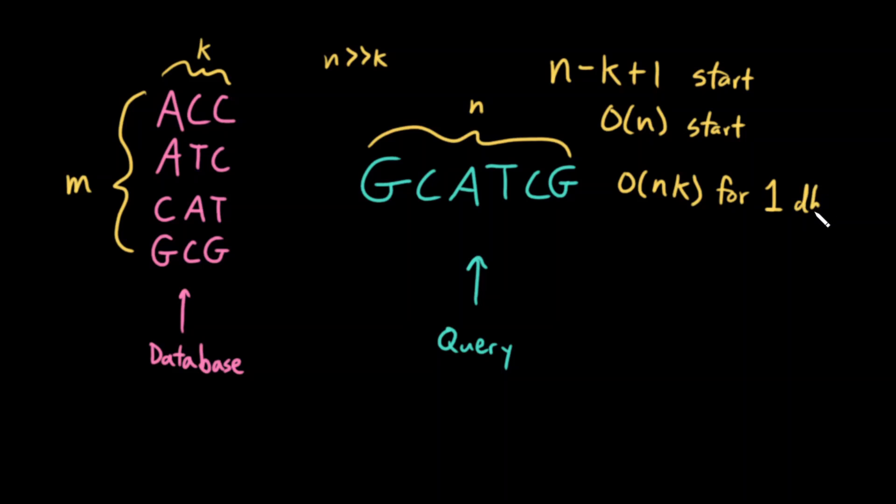For one database sequence, the overall time complexity is O(nkm), and this is extremely slow. The human genome for example is four billion letters long, k could be decently big—oftentimes I'm looking for motifs that are roughly 10 to 20 letters long, and m could be massive. There could be millions of short sequences that I want to match. So this is prohibitively slow.